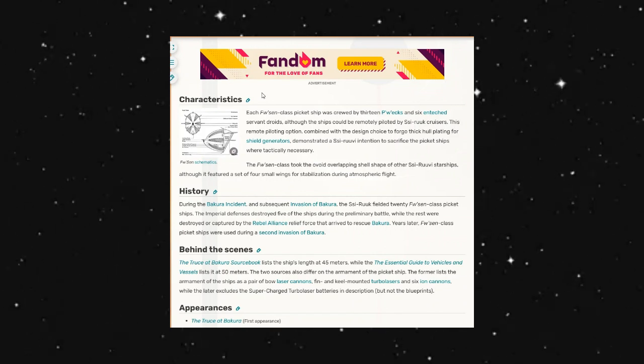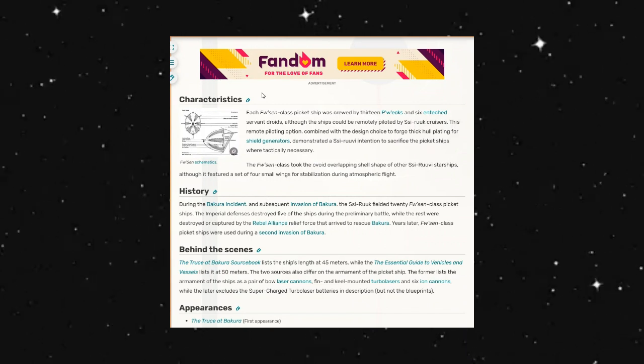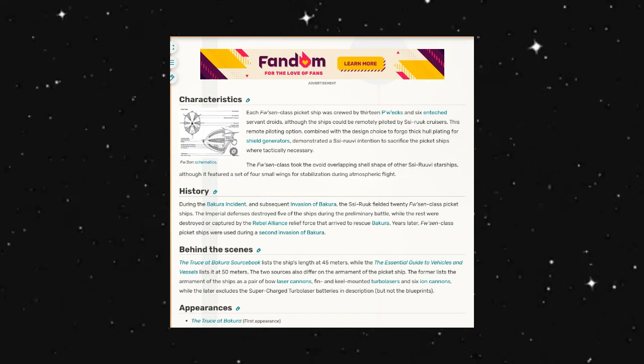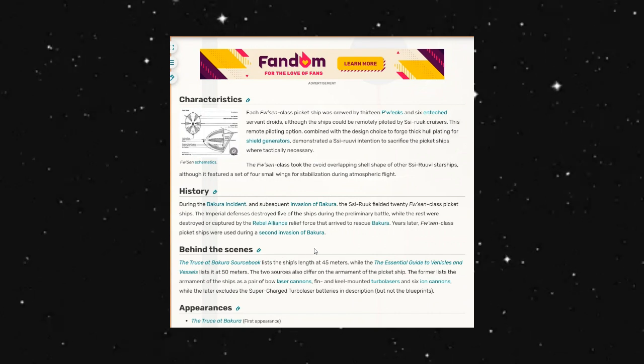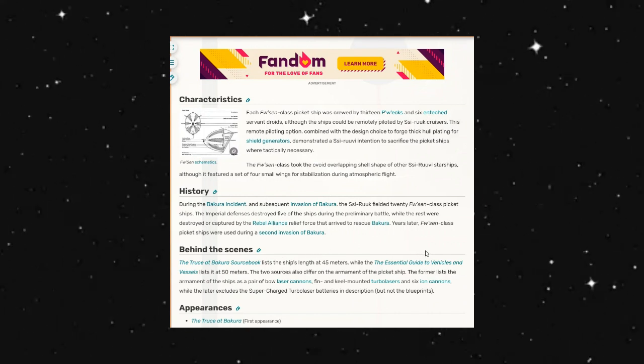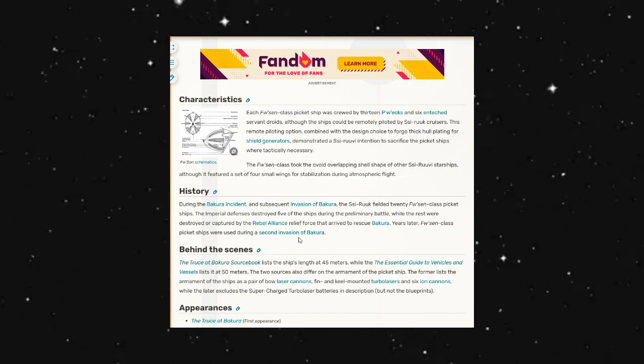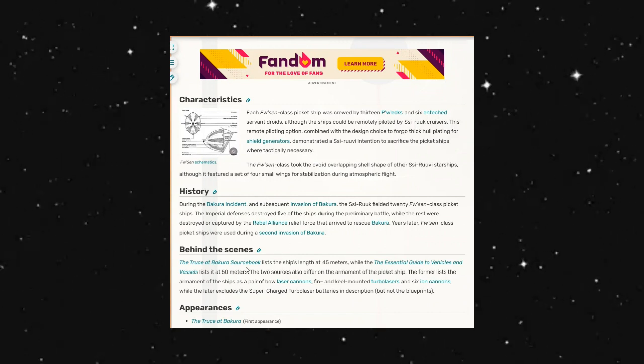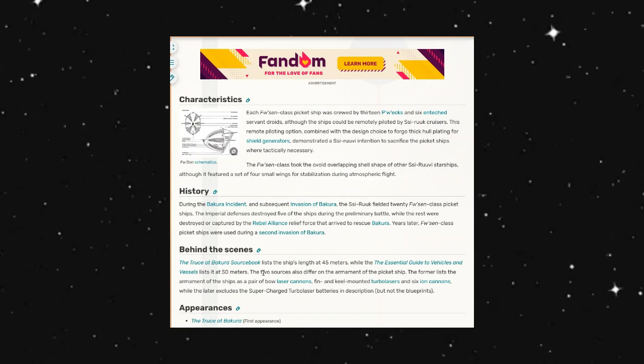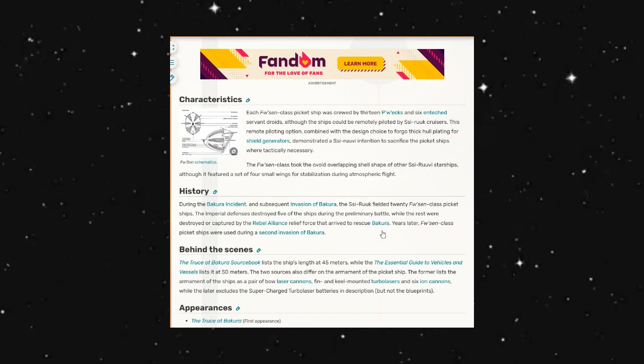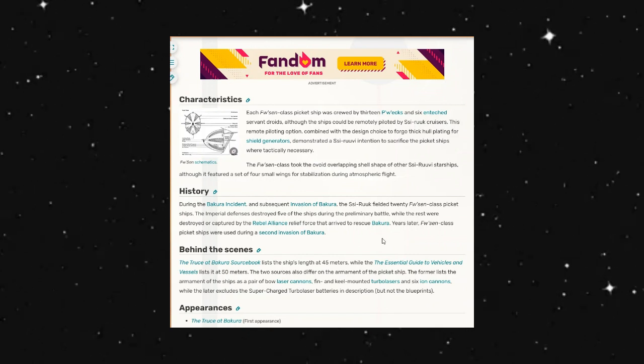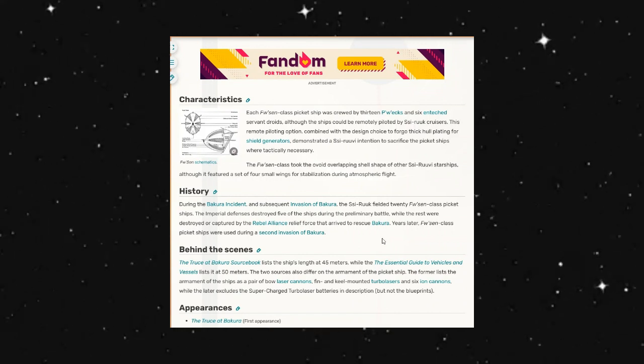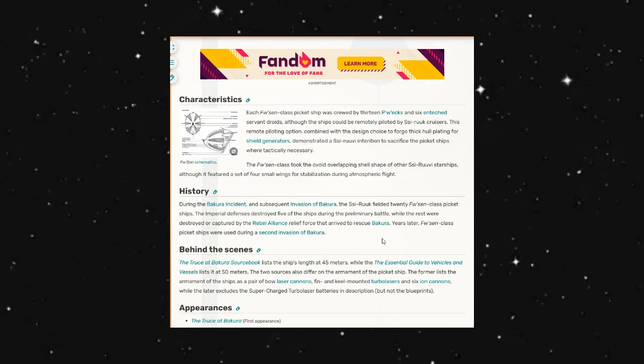Years later, Fushin class picket ships were used during the second invasion of Bakura. Behind the scenes, the Truce of the Bakura source book lists the ship's length at 45 meters while the Essential Guide to Vehicles and Vessels listed at 50 meters. The two sources also differ on the armament of the picket ship. The former lists the armament as a pair of bow laser cannons, thin and keel mounted turbolasers, and six ion cannons, while the latter excludes the supercharged turbolaser batteries in description but not in the blueprints.